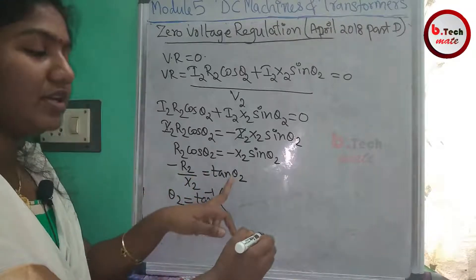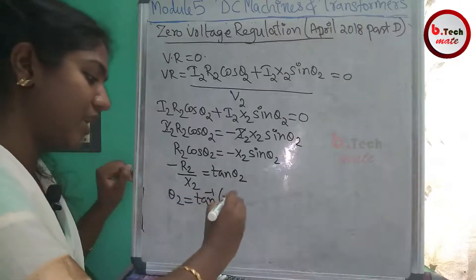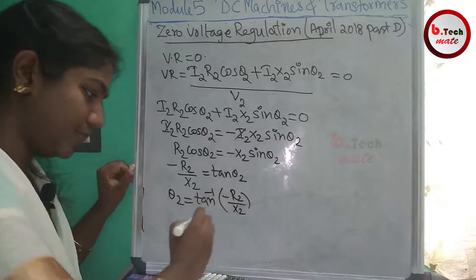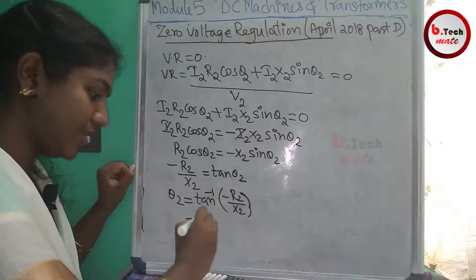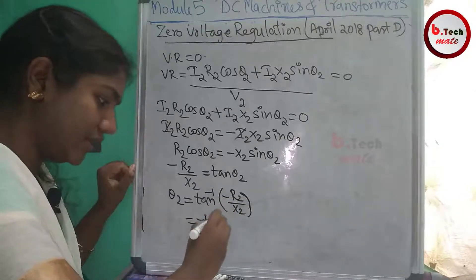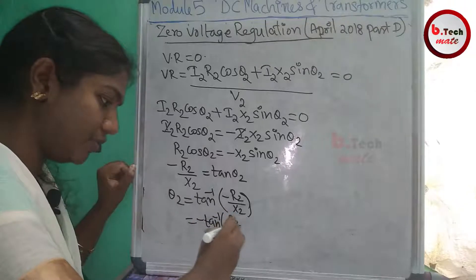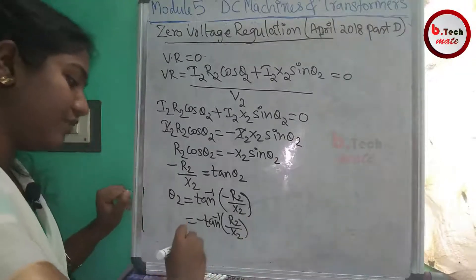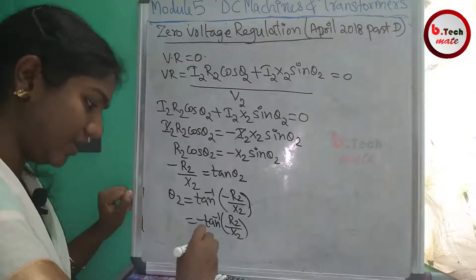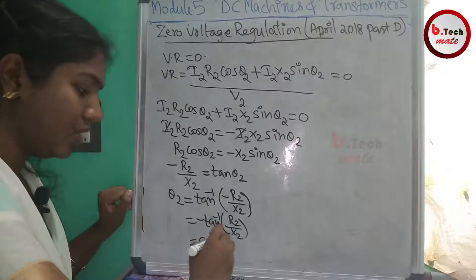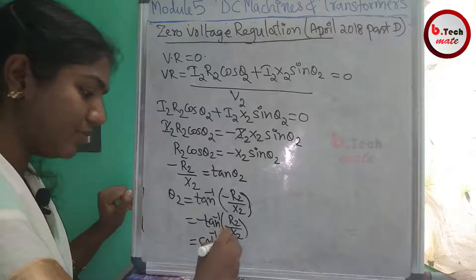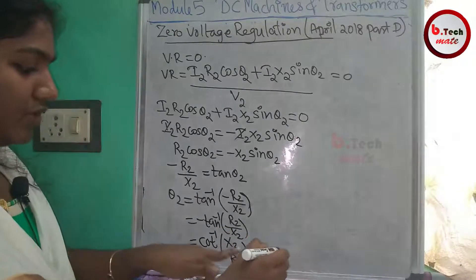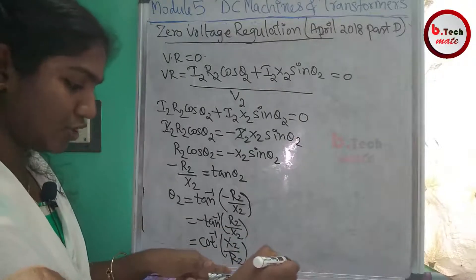Taking tan inverse of both sides: θ₂ equals tan⁻¹ of (minus R₂/X₂). Since tan⁻¹(minus θ) equals minus tan⁻¹(θ), we get θ₂ equals minus tan⁻¹(R₂/X₂). Now tan⁻¹(R₂/X₂) can be expressed using the cot inverse relation.